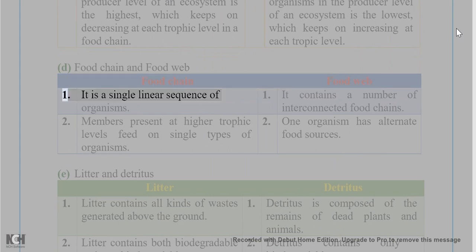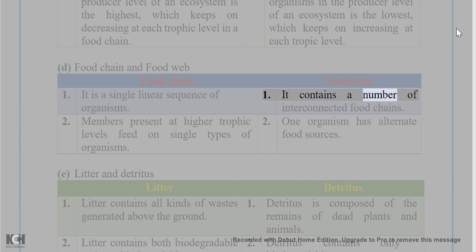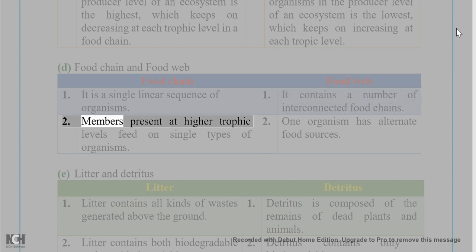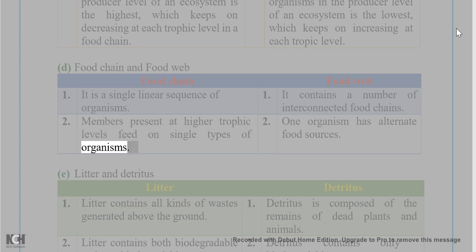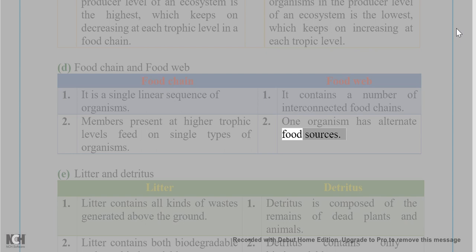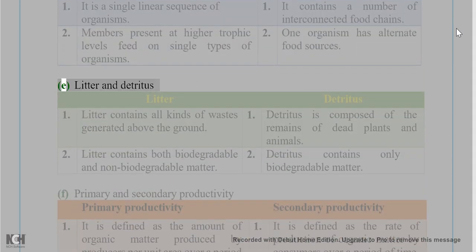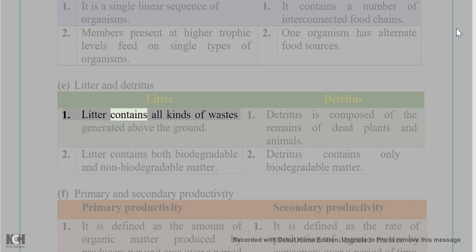Answer 6(D): Food Chain vs. Food Web. A food chain is a single linear sequence of organisms where members at higher trophic levels feed on single types of organisms. A food web contains a number of interconnected food chains where one organism has alternate food sources.